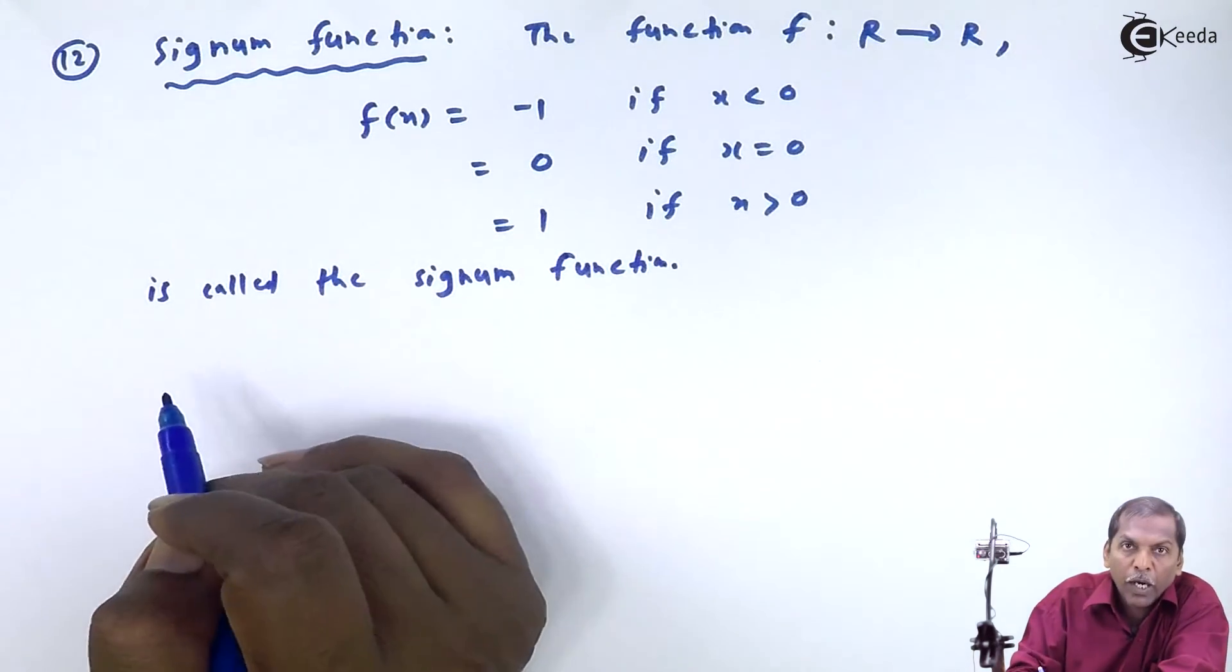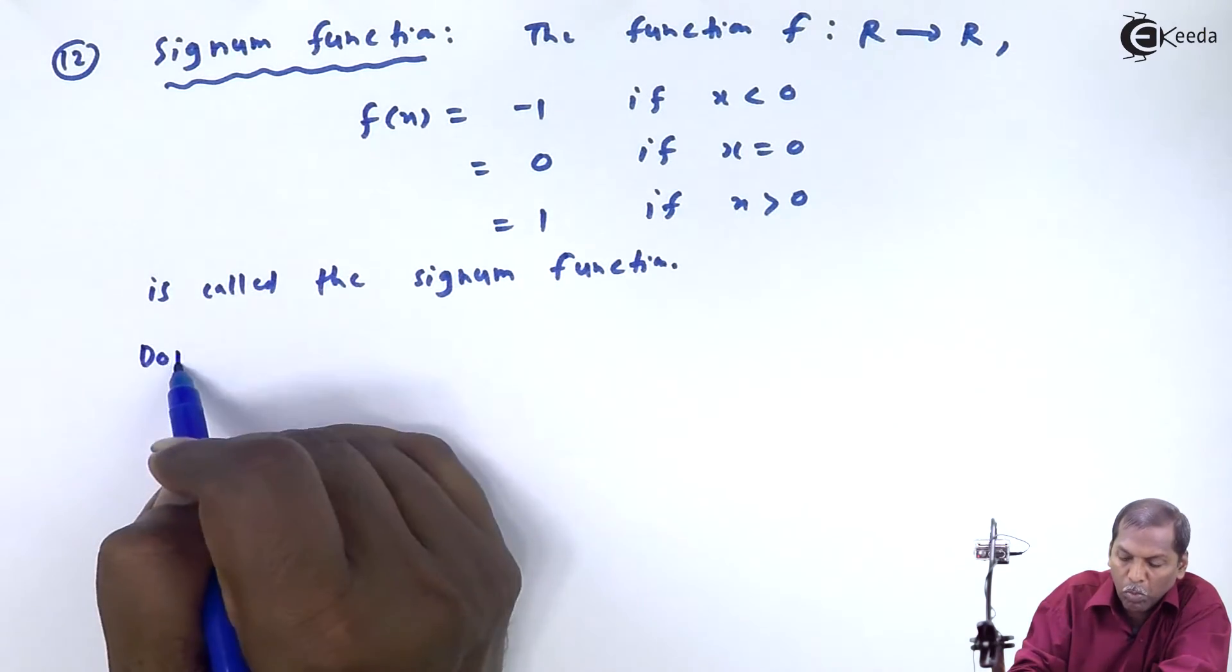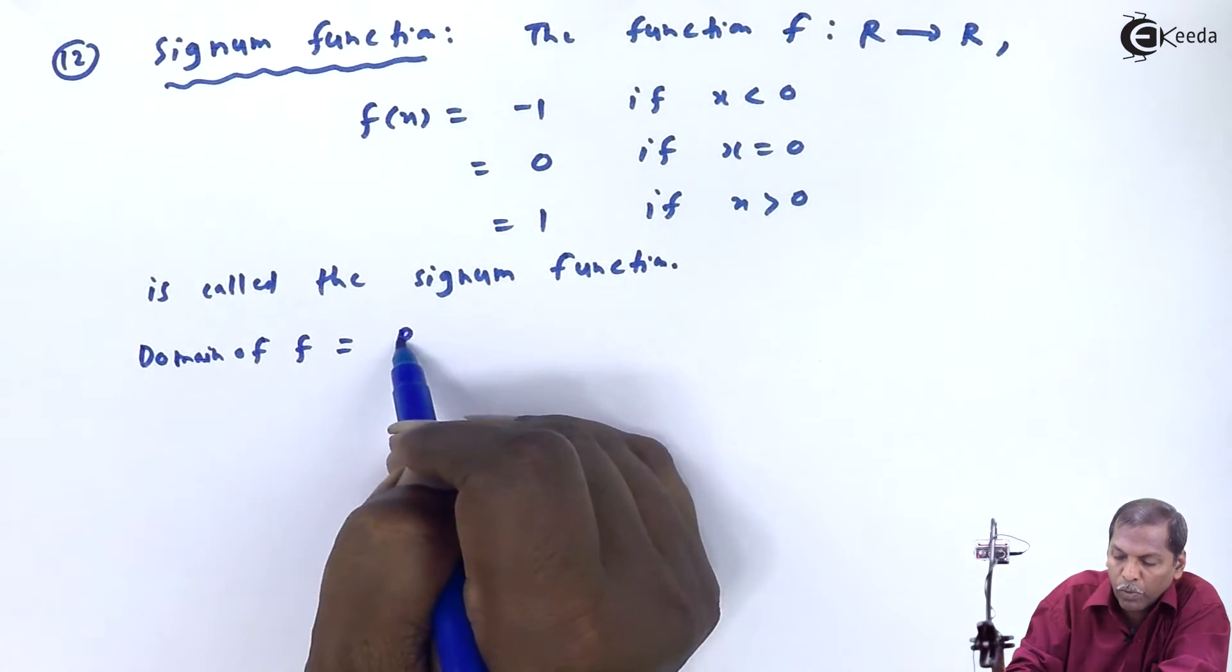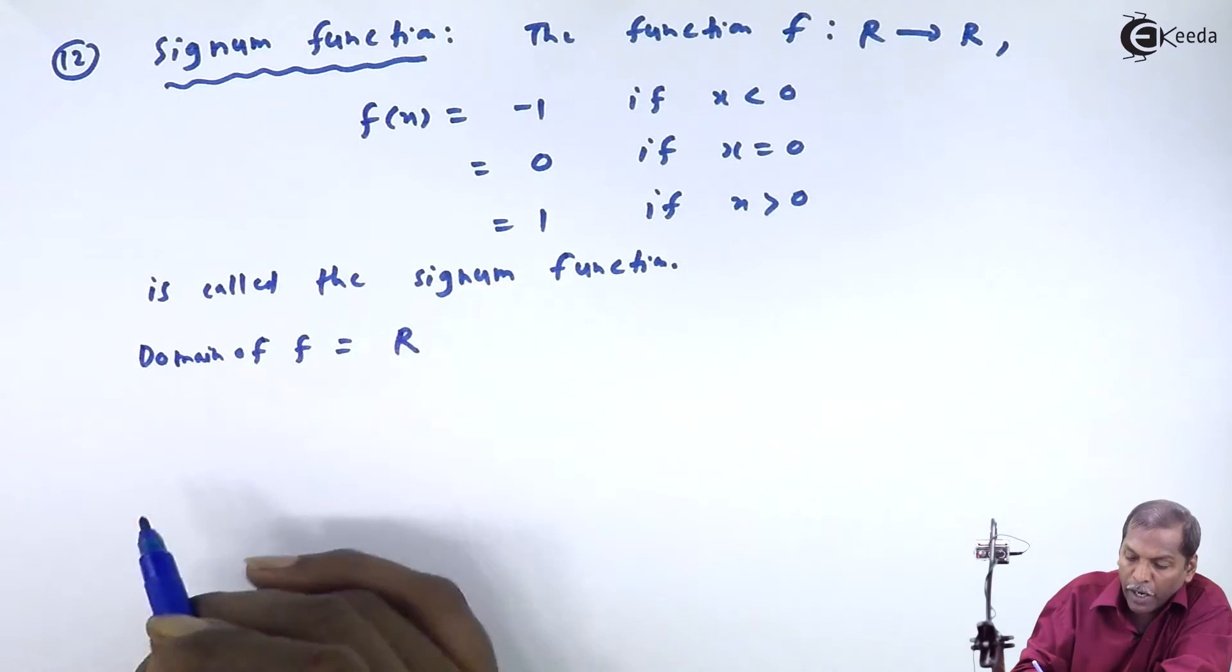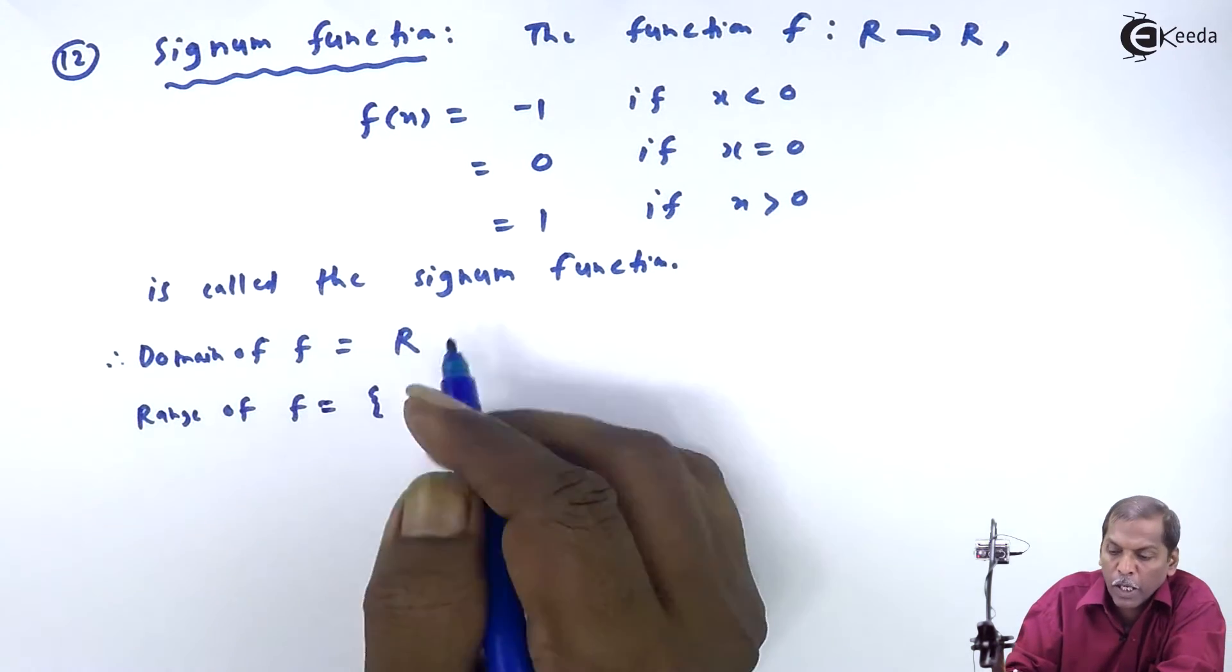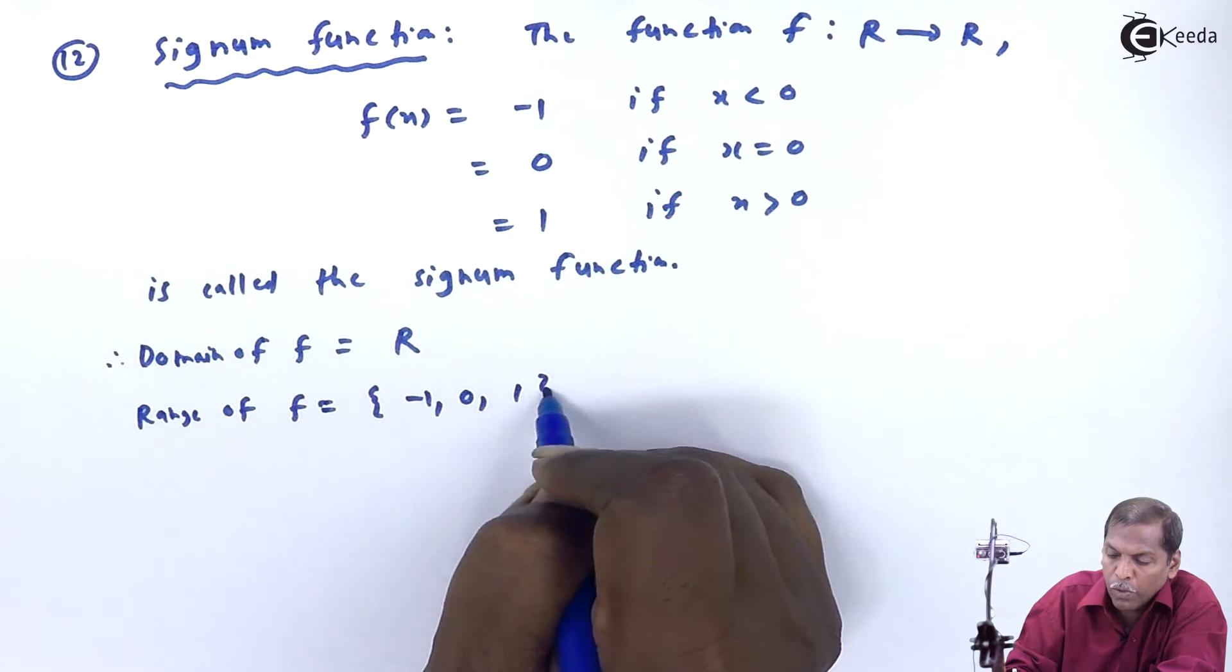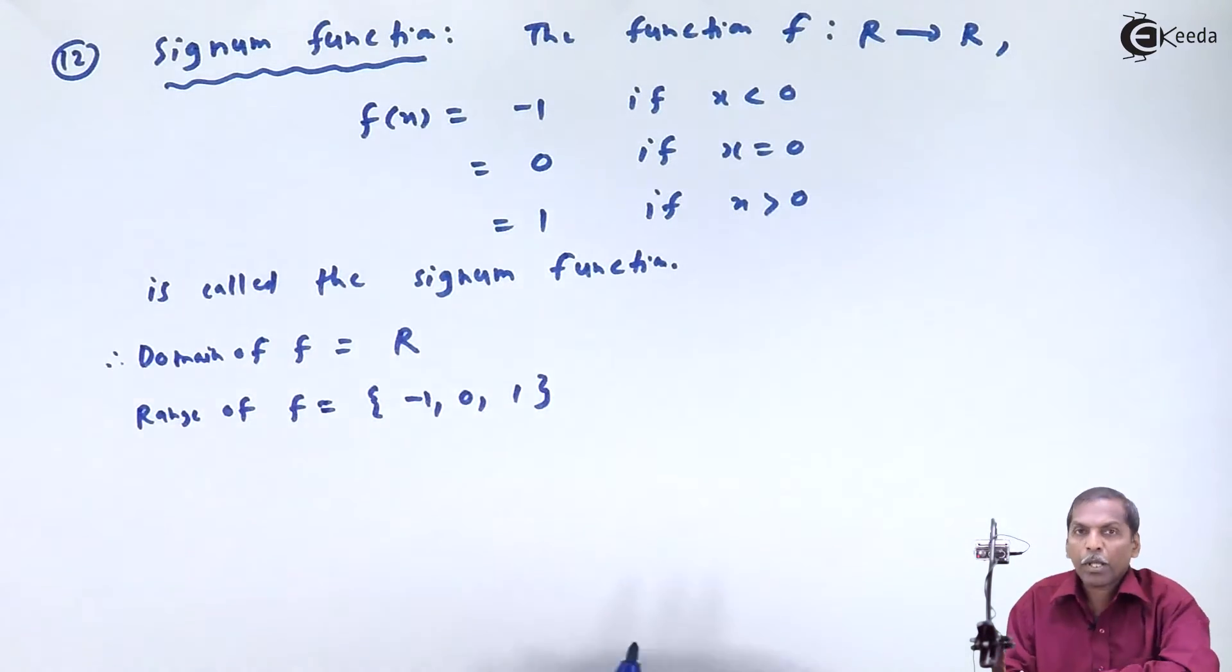If we observe, in this case the domain of f is equal to the set of real numbers, and the range of f is equal to {-1, 0, 1}. If we observe this graph,